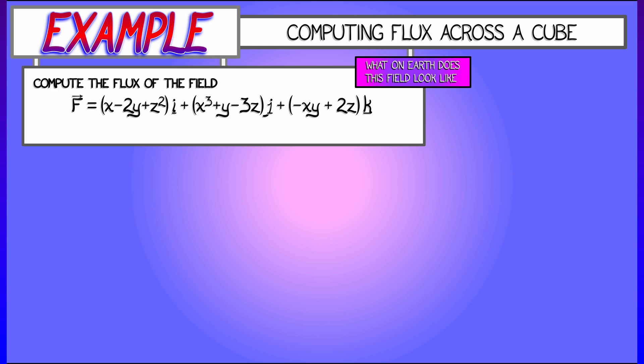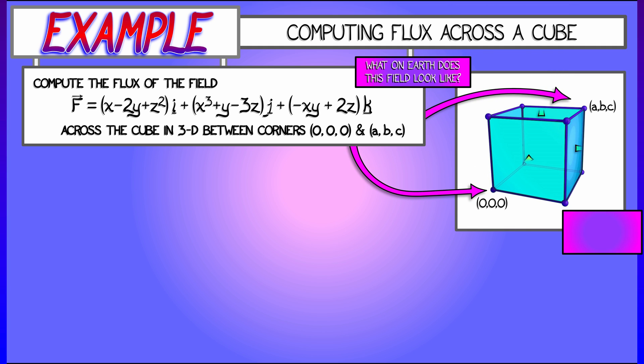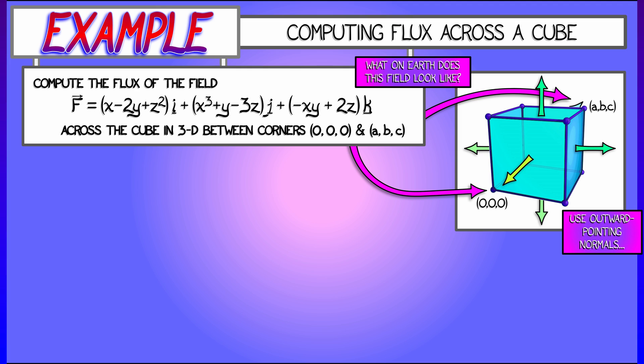That's a crazy-looking vector field, I'm not even going to try to draw it. But how do we compute the flux across the boundary of the cube or rectangular prism in 3D that has corners (0,0,0) and (A,B,C)? Let's use some outward-pointing normals on that.